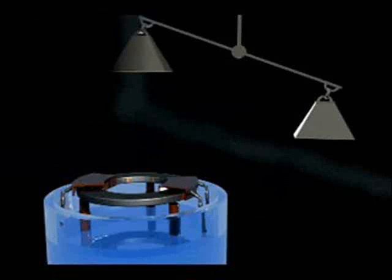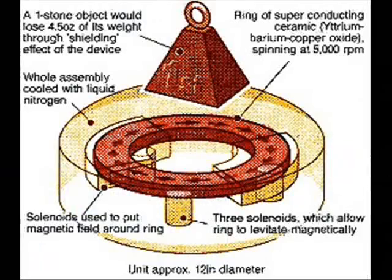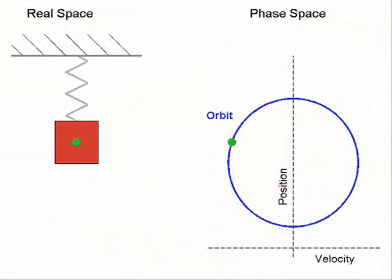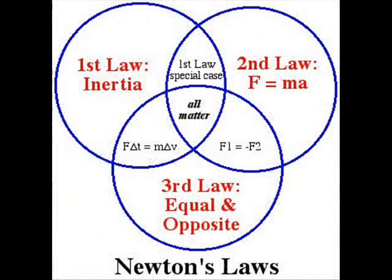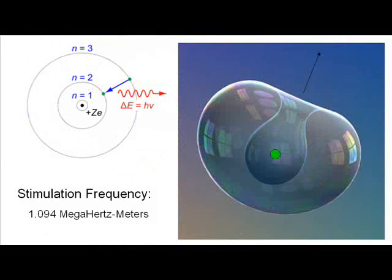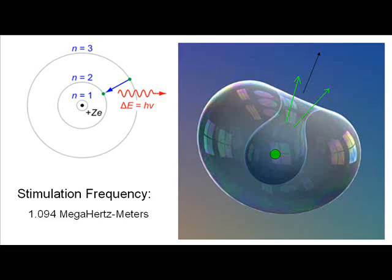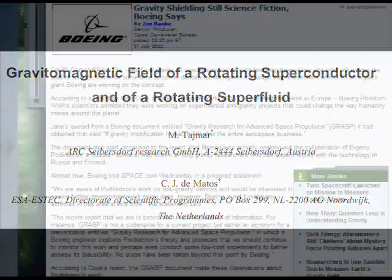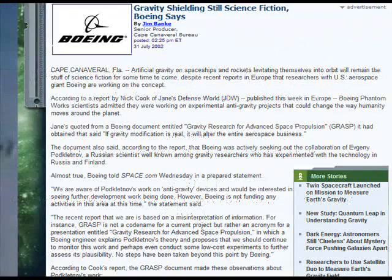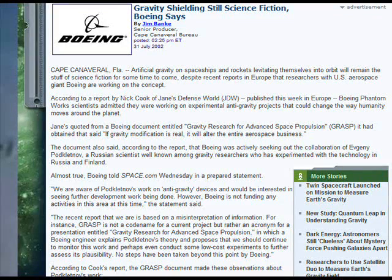Earlier reports of a gravitational shielding effect defy conservation laws and are therefore false. However, the theoretical construct outlined in this video does not violate the laws of conservation. It's simply high-frequency electromagnetic energy in, gravitational propulsion out. In addition to NASA and ESA replications, Boeing Aerospace has been researching this effect in its highly classified Project Grasp.